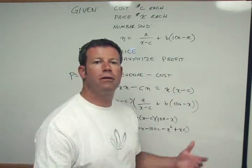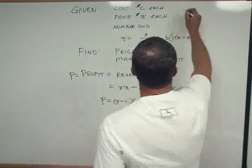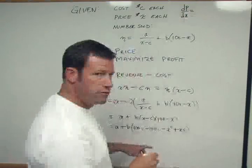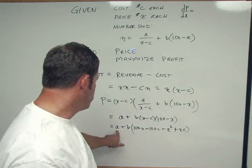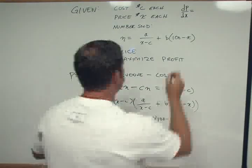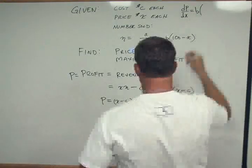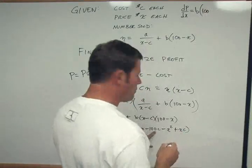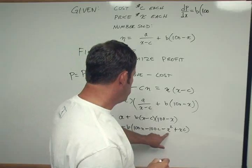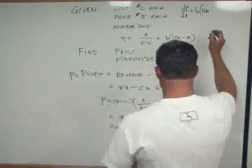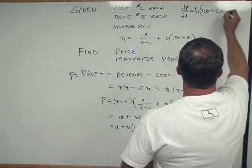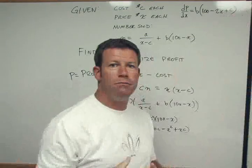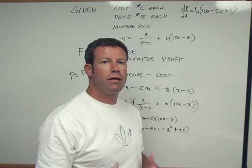So now we can take calculus into the equation. And we have to take the derivative of this equation. The derivative of A is 0, obviously. The B comes outside. Derivative of 100X would be 100. Derivative of 100C is 0, 2X and C. And to find the maximum point for X, we're going to let this equal 0.